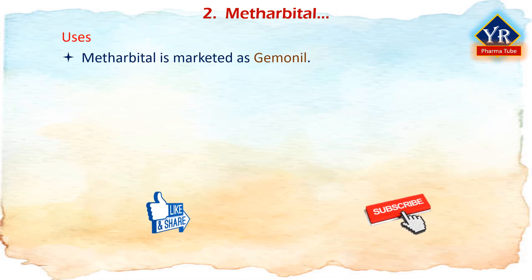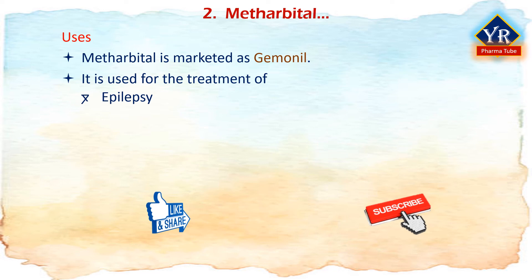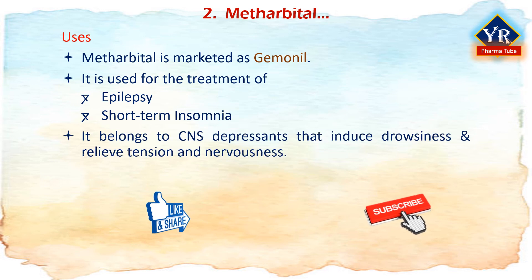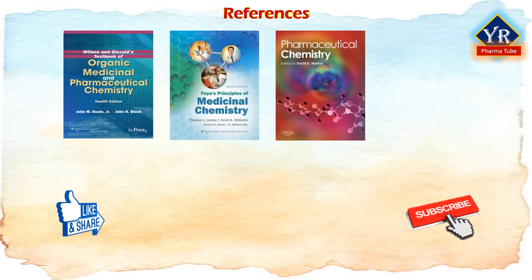Methorbitol is marketed as Gemonil by Abbott Laboratories. It is used for the treatment of epilepsy and short-term insomnia. It belongs to a group of medicines called CNS depressants that induce drowsiness and relieve tension and nervousness. Little analgesia is conferred by barbiturates, and their use in the presence of pain may result in excitation. This is the list of references followed for the lesson.